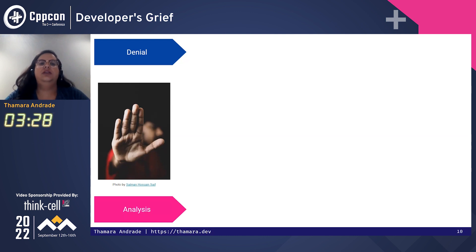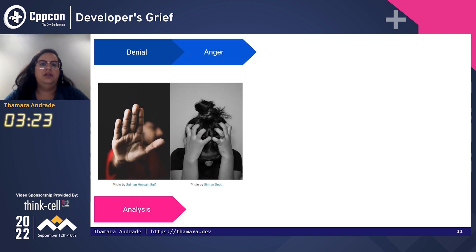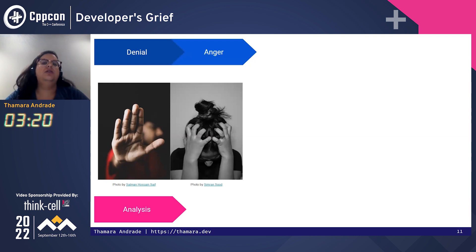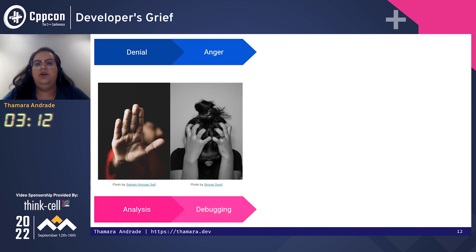The second stage is anger. That's when you are furious to see what's happening. You know that, okay, there is something here. So you need to find out, you need to root cause this. And you get very angry and frustrated. This is when we are debugging the problem.